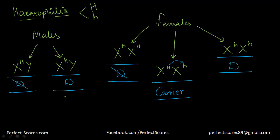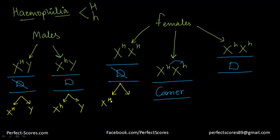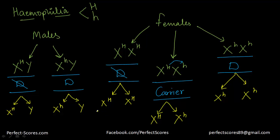Now how is she a carrier? Let's look at the gametes that these five combinations will produce. The male that was absolutely fine will produce two kinds of gametes: one with dominant H and the Y chromosome. The male who had the disease will produce one with the recessive allele and the Y chromosome. The homozygous dominant female gives rise to two dominant alleles through gametes. Now, if fertilization happens between this Y and this dominant X, the child is going to be a healthy male.